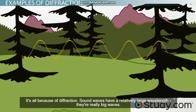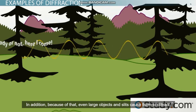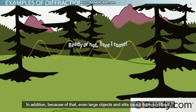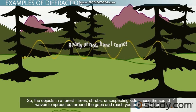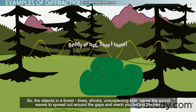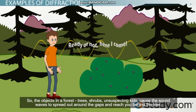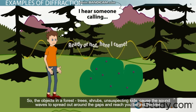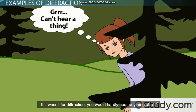Sound waves have relatively large wavelengths — they're really big waves. And because of that, even large objects and slits cause them to diffract. So the objects in a forest — trees, shrubs, unsuspecting kids — cause the sound waves to spread out around the gaps and reach you behind the tree. If it wasn't for diffraction, you would hardly hear anything at all.